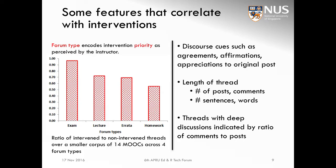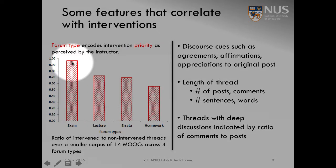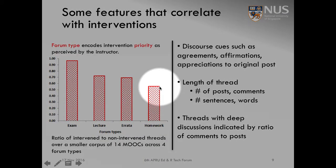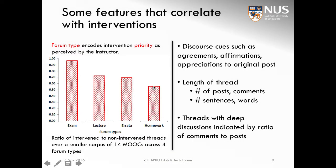We looked at what types of features of discussion threads correlate well with intervention. Not surprisingly, but not previously identified by prior work, forum type encodes intervention priority. It is easy to understand that when an exam is coming up, students would have a lot of questions, and those questions would be timely to intervene on. You can see that over 90% of posts related to an exam are usually intervened by an instructor.